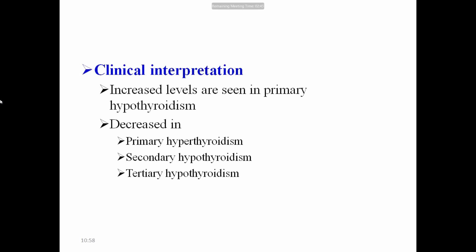In the clinical interpretation of the TSH test: TSH is increased in primary hypothyroidism. Since TSH secretion is controlled by negative feedback, when T3 and T4 are low in circulation, it increases TSH synthesis from the pituitary gland. TSH is decreased in primary hyperthyroidism — increased T3 and T4 inhibit synthesis and secretion of TSH from the pituitary gland, so TSH concentrations will be decreased.